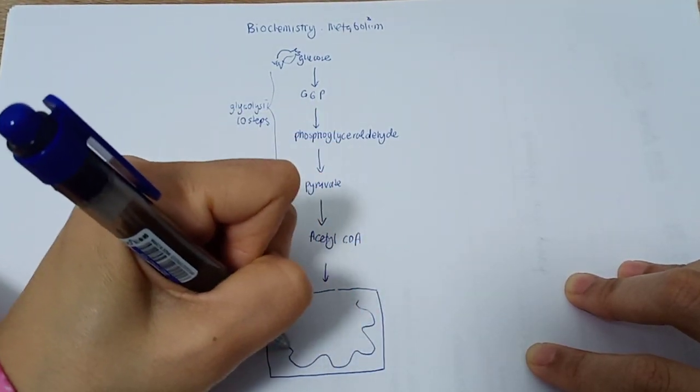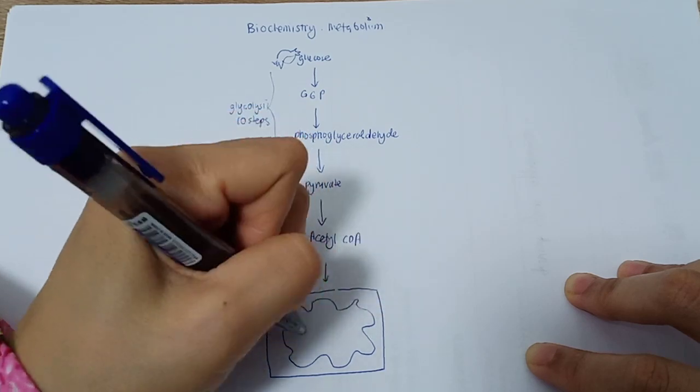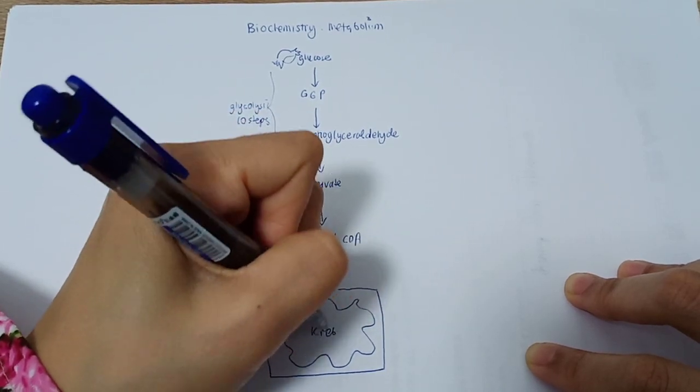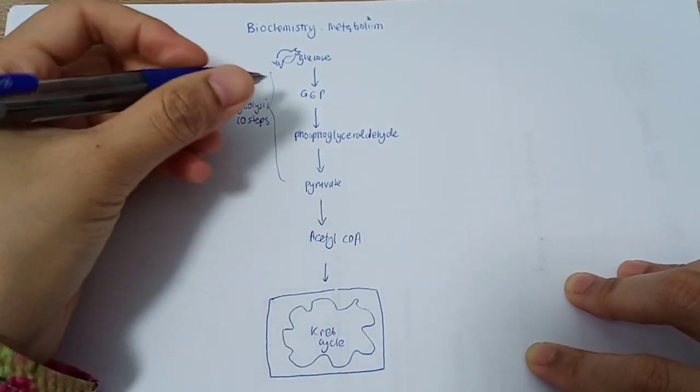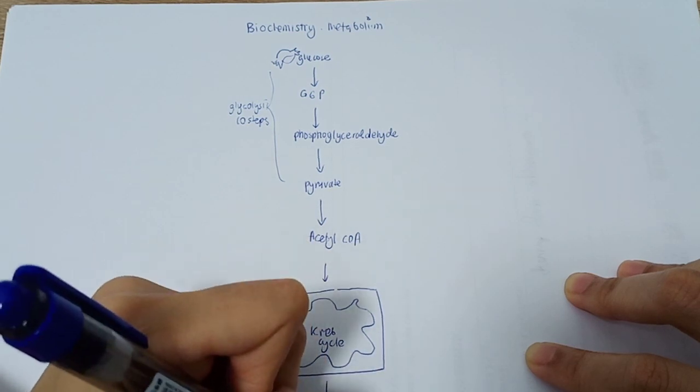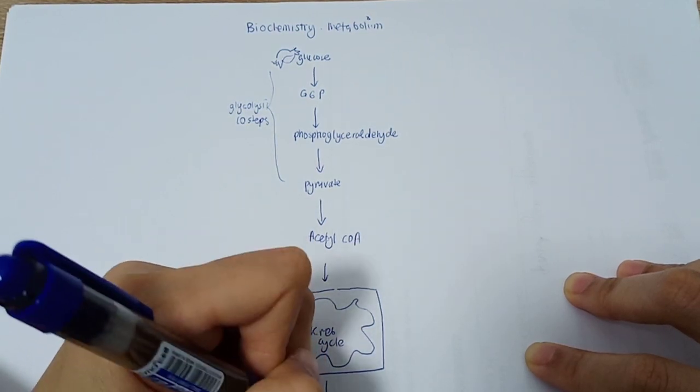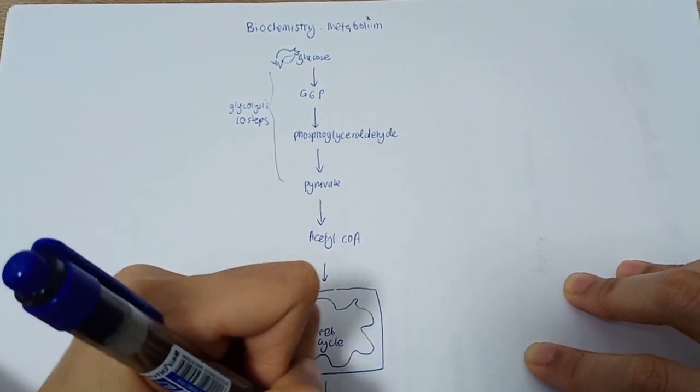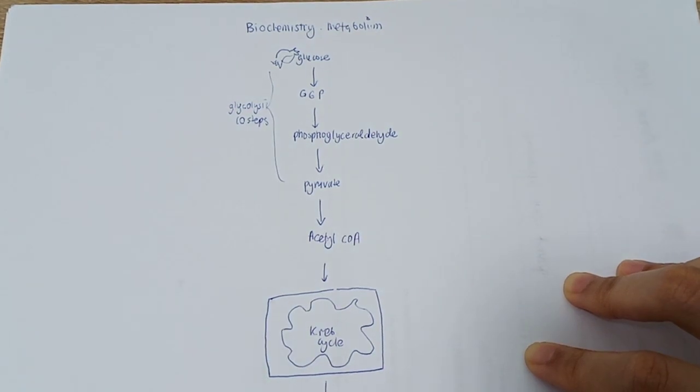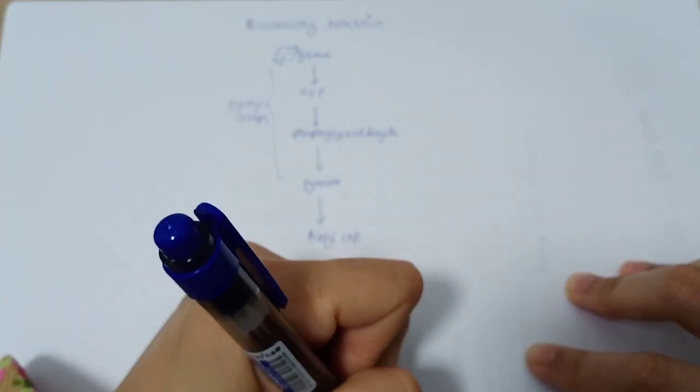Here is the mitochondria and this is the Krebs cycle. The aim of this is actually to go into the electron transport chain, the ETC, which will produce a huge amount of ATPs for energy.